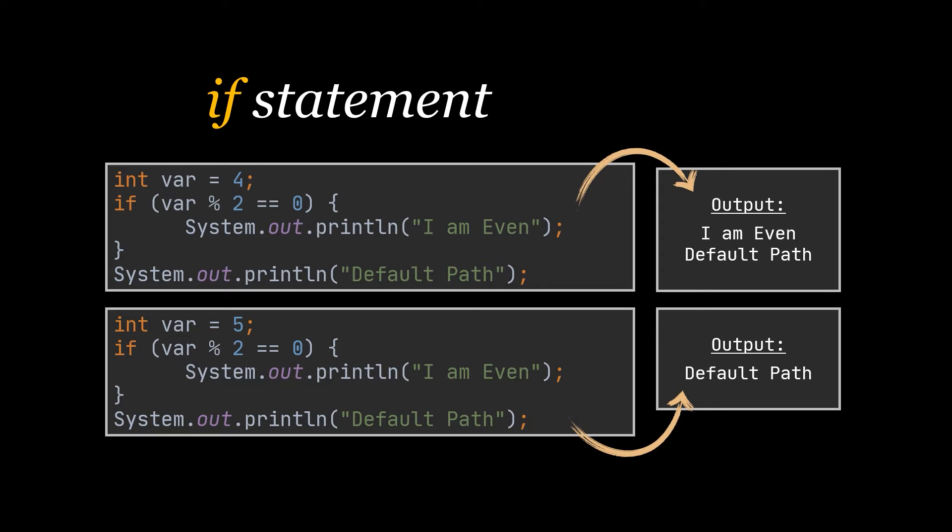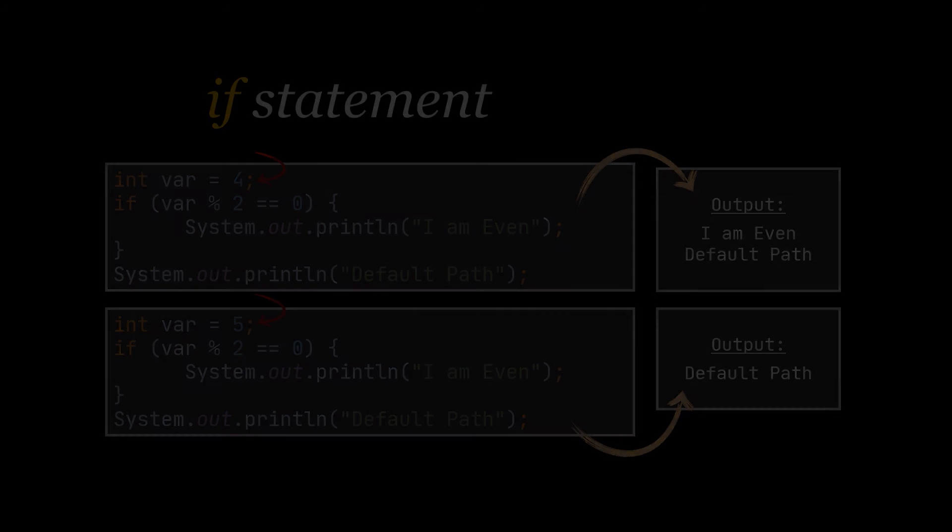On the screen as you can see, the block of code inside the if condition only gets executed if the condition is true, which is the case when the variable is four. But when the variable is equal to five or any other odd number, then the code block inside the if condition is skipped. In case we require another block of code to be executed only when the condition is false, the Java if-else statement can be used.